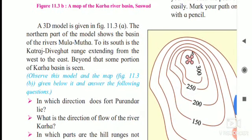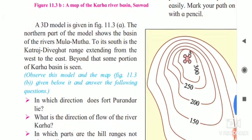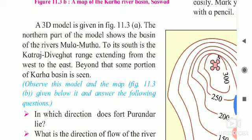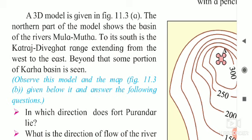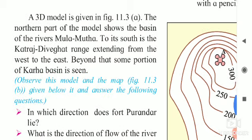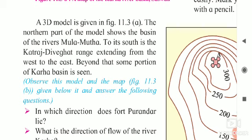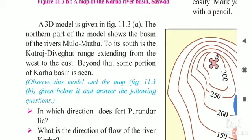A 3D model is given in figure 11.3A. The northern part of the model shows the basin of the river Mulla Mutha. To its south is the Katraj Diveghat range extending from the west to the east, beyond that some portion of Karha basin.